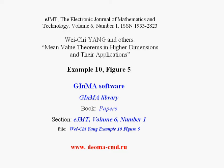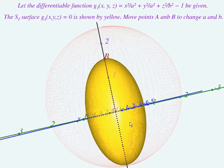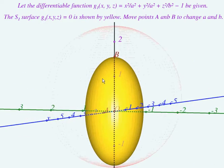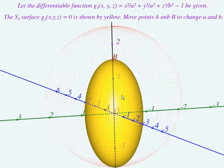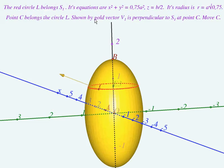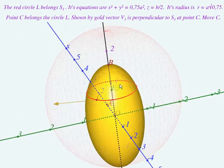Let us consider the way of using interactive GInMA illustration for this example. We consider three differentiable surfaces S1, S2, and S3. Let the circle L be the curve of intersection of S1, S2, and S3.